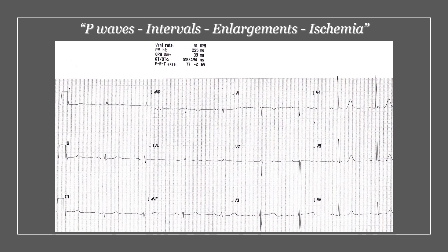Moving on to the P waves, intervals and enlargements and ischemia. The P waves — I can only see one P wave before each complex. Looking at the intervals, the PR interval is 235ms and it's more than five small squares, so the PR interval is prolonged. It is fixed, so that is a first degree heart block. Looking at the QT interval, it is 494ms, so that is on the prolonged side — we've got a prolonged QT interval.